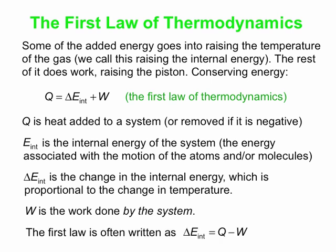The first law is often written with delta E internal on the left-hand side. So that would be delta E internal is Q minus W. Of course, that's the same equation as Q is delta E internal plus W. It doesn't matter how you arrange the variables. It's just energy conservation applied to thermodynamic systems.